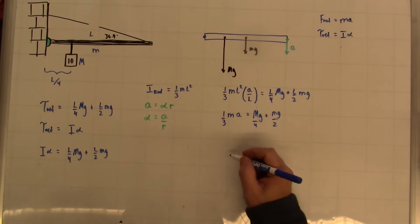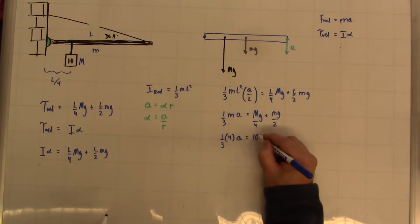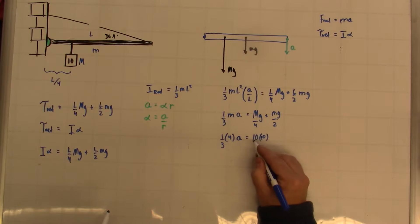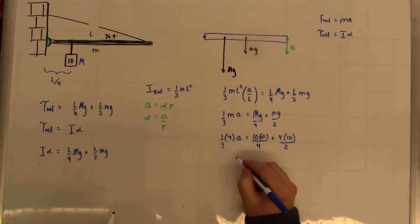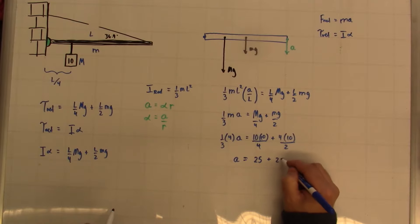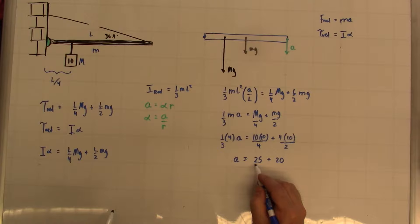So let's plug and chug here. So 1 third, the little mass is 4 times the acceleration, is equal to big M is 10, gravitational field strength is 10, all over 4, plus mass is 4, gravitational field strength is 10, all over 2. 10 times 10 is 100, divided by 4 is 25, plus 4 times 10 is 40, divided by 2 is 20, and this is divided by 3 over 4. And when I solve for that, the acceleration is equal to 33.75 meters per second per second.